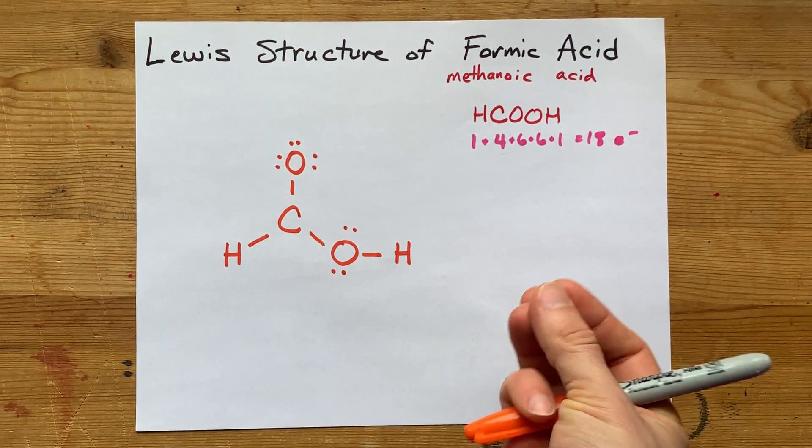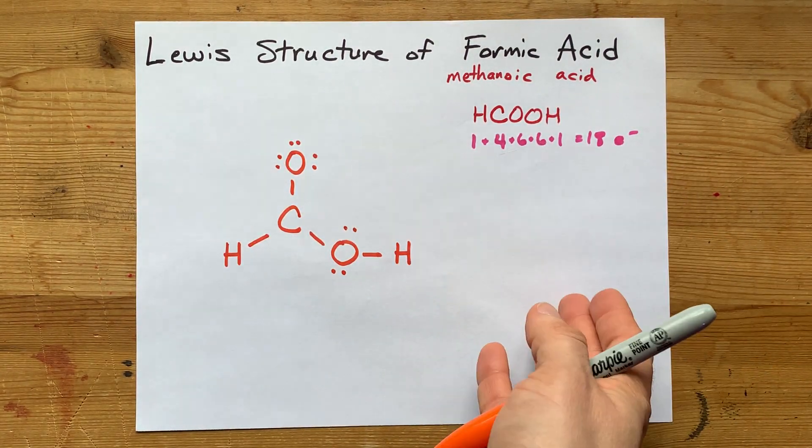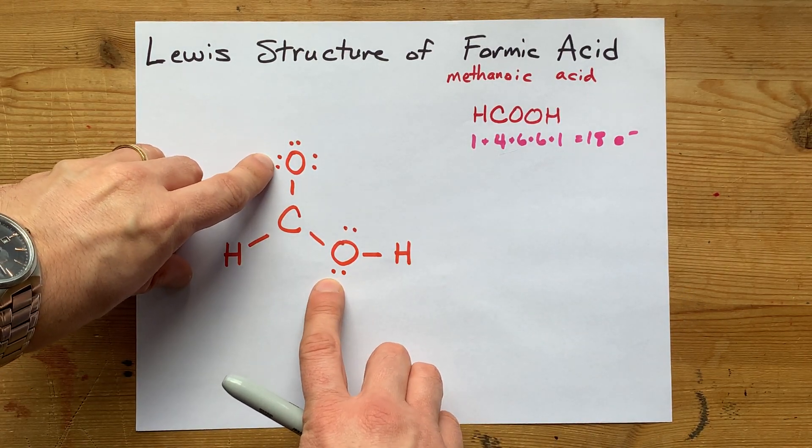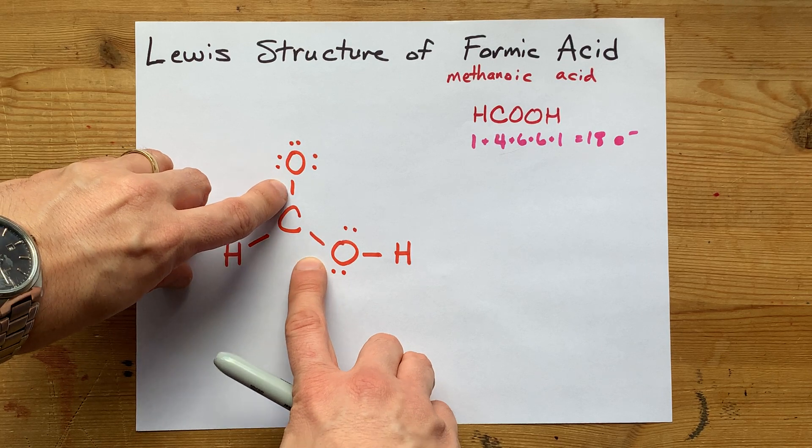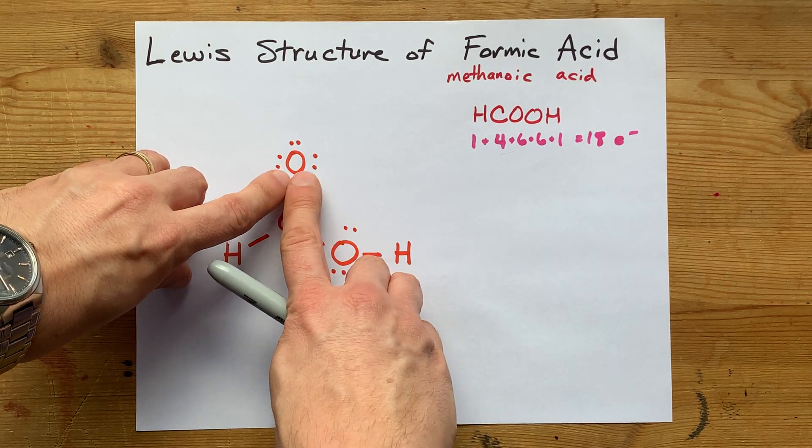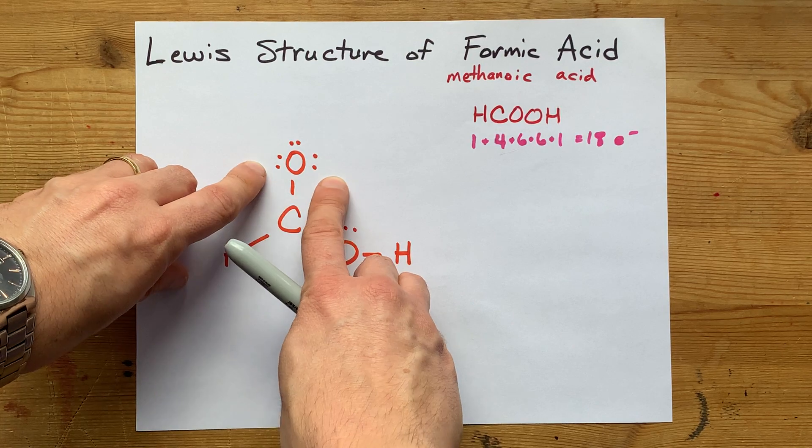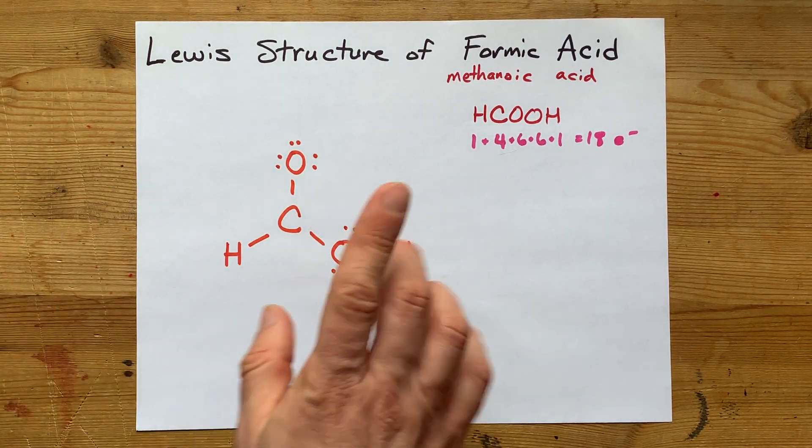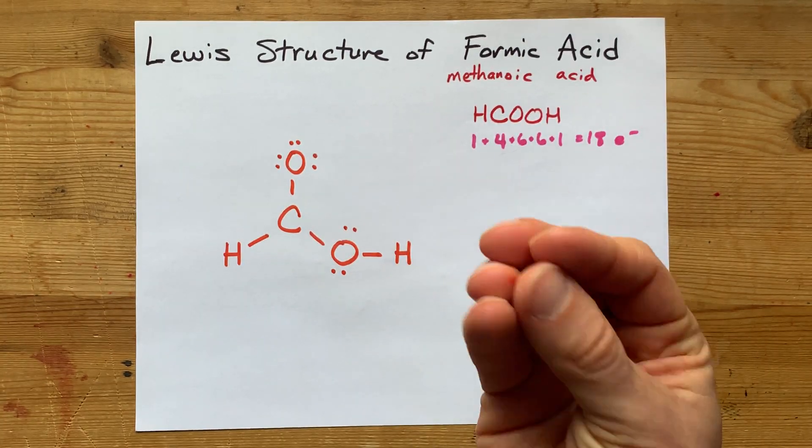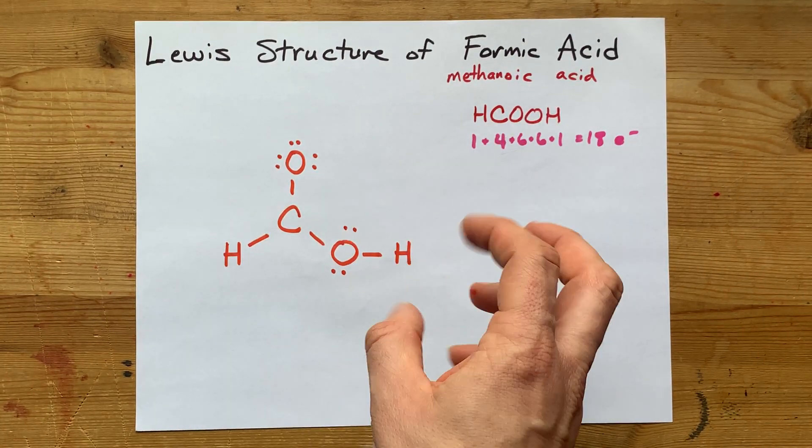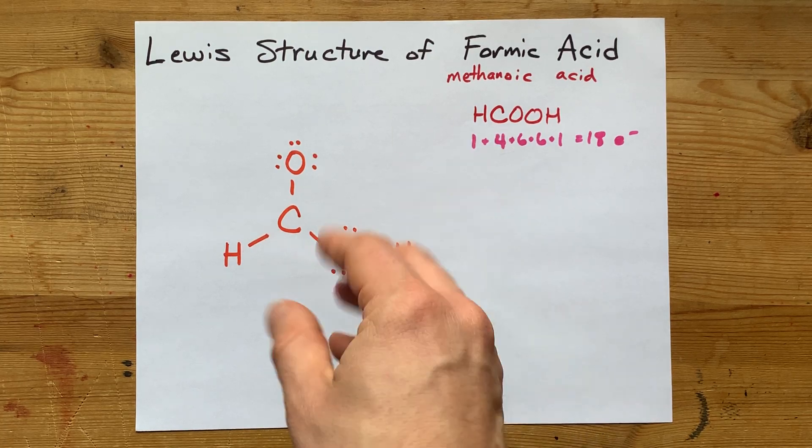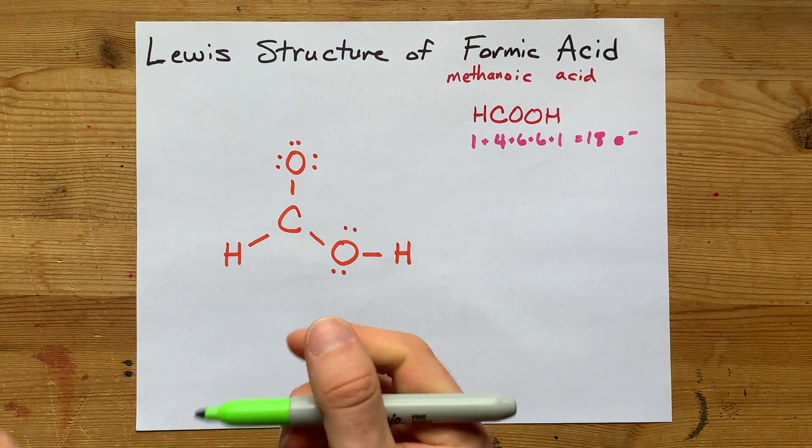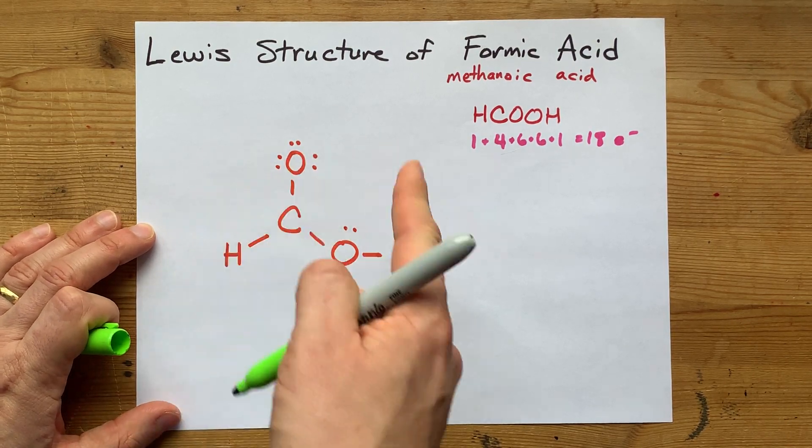So, from either of these oxygens, I have to move the lone pair into the bond. Now, I'm going to choose this oxygen here, because it has what we call a negative formal charge. A formal charge is not an official thing. It's just a way you can do some accounting to figure out which of the atoms is more likely to have donated the electrons.